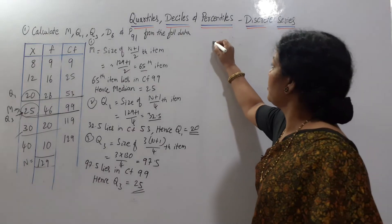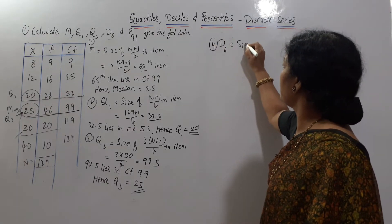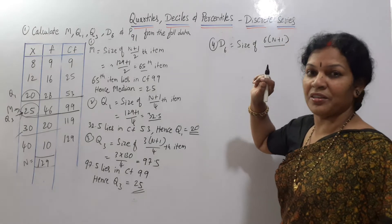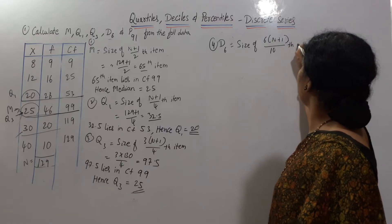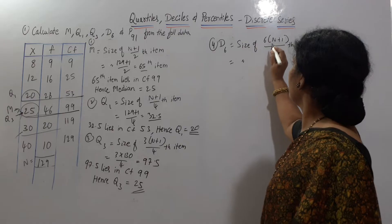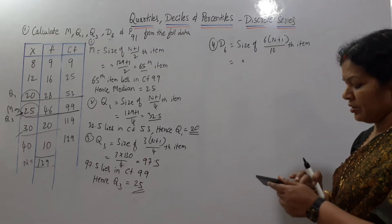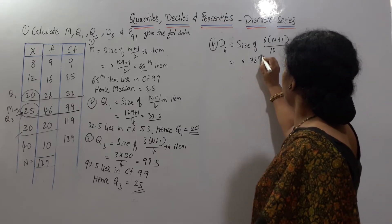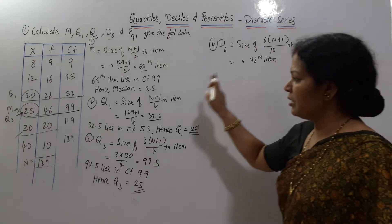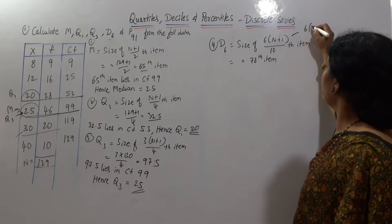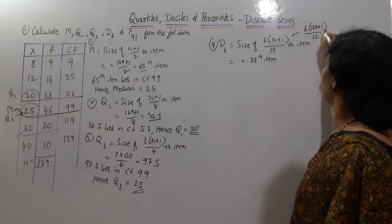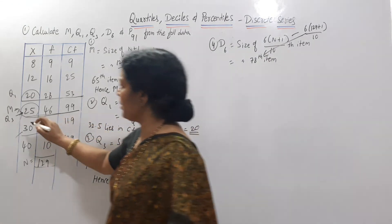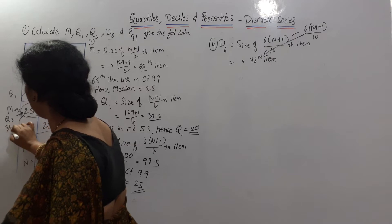The next is D6. The D6 formula is size of 6×(n+1)/10 th item, since deciles divide by 10. So 6×130 divided by 10 equals 78. The 78th item — where is 78? It lies in CF 99, so the X value is 25. Hence D6 is also 25.